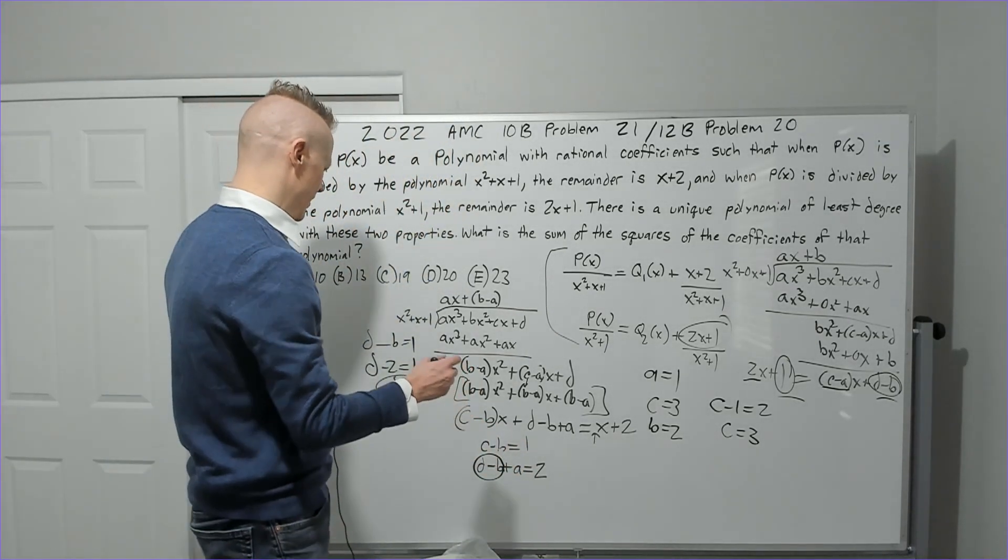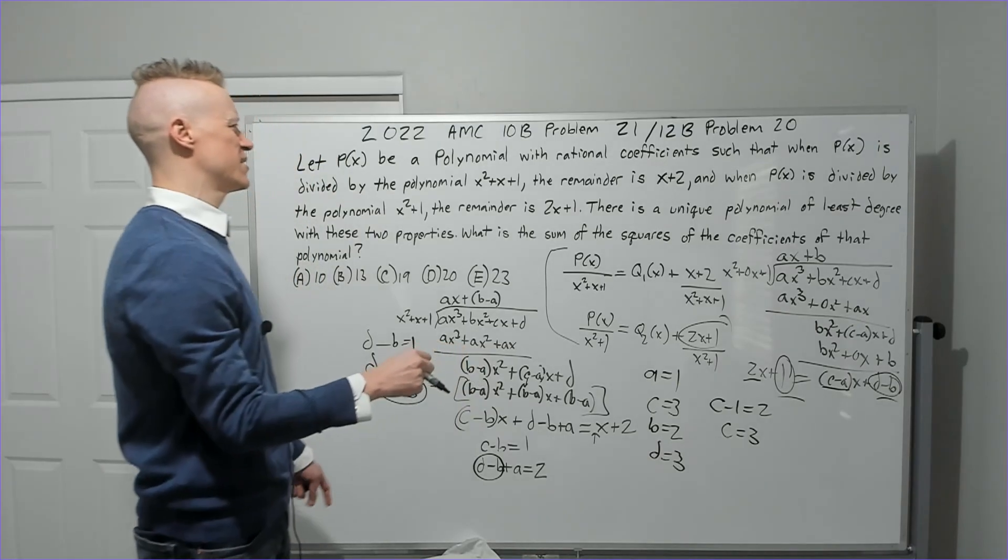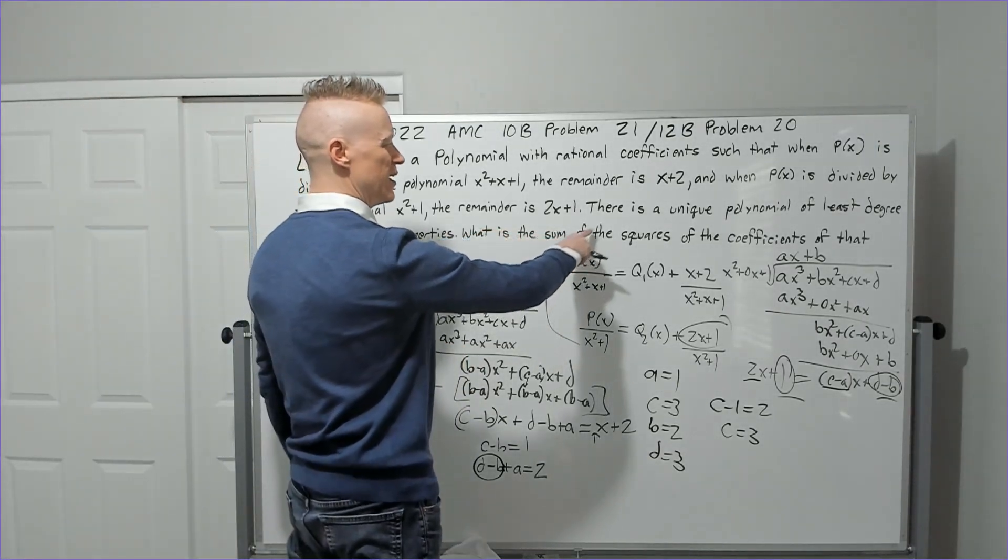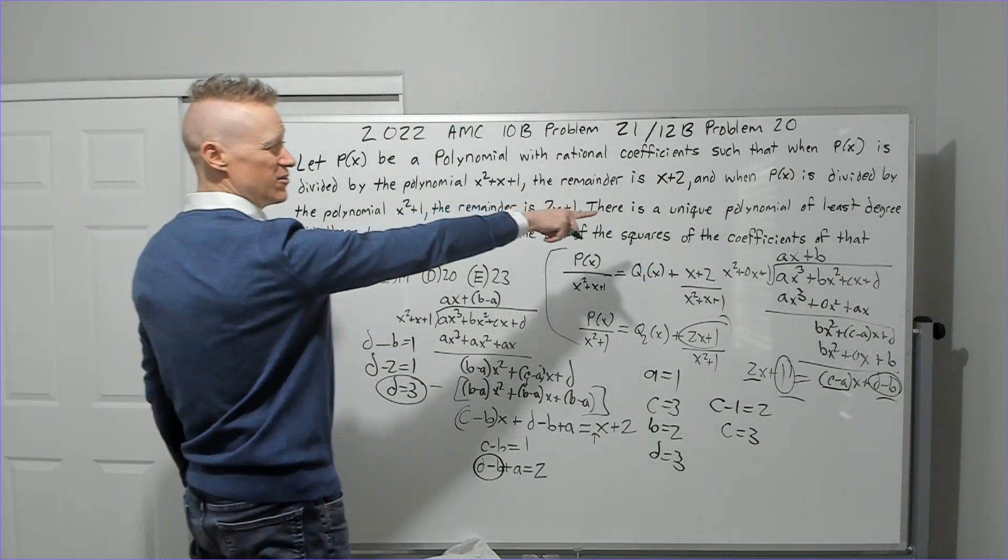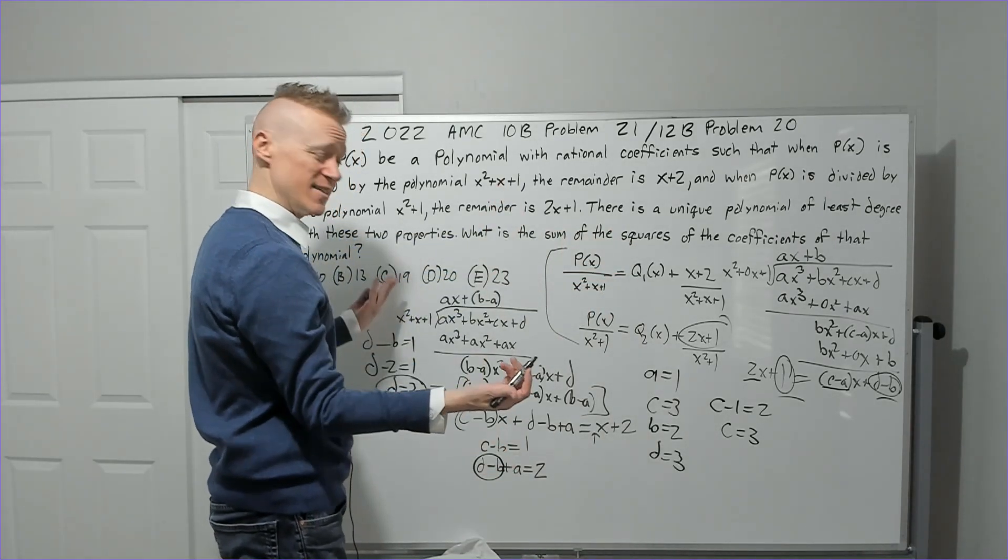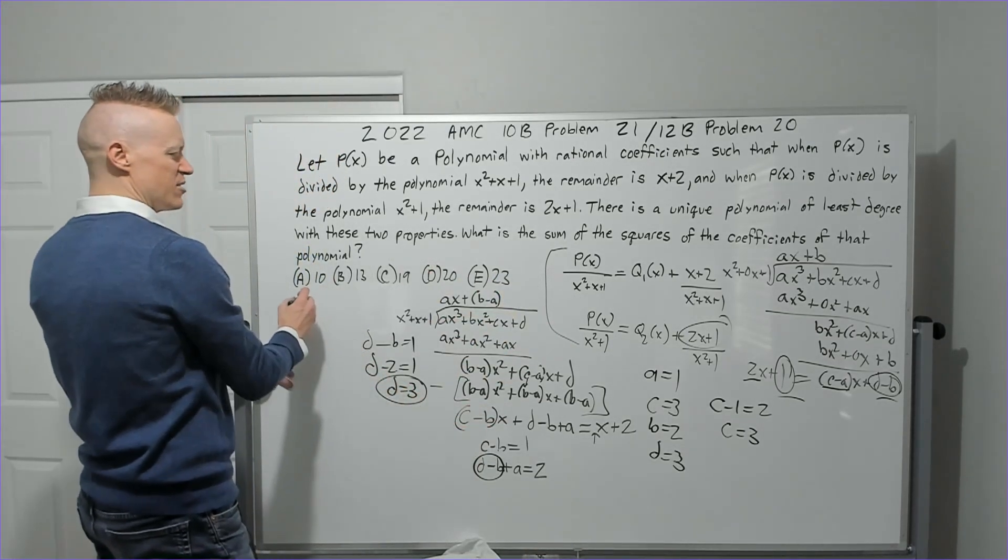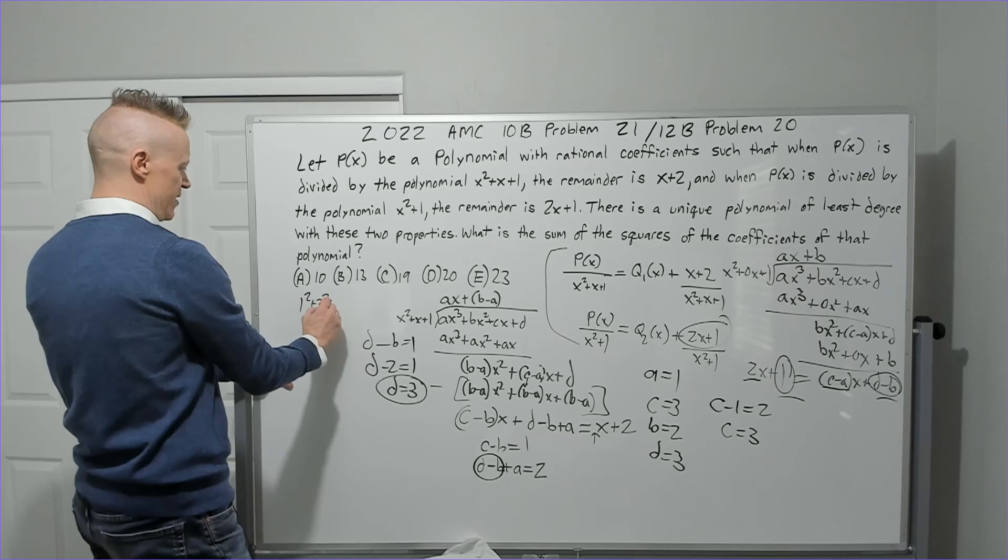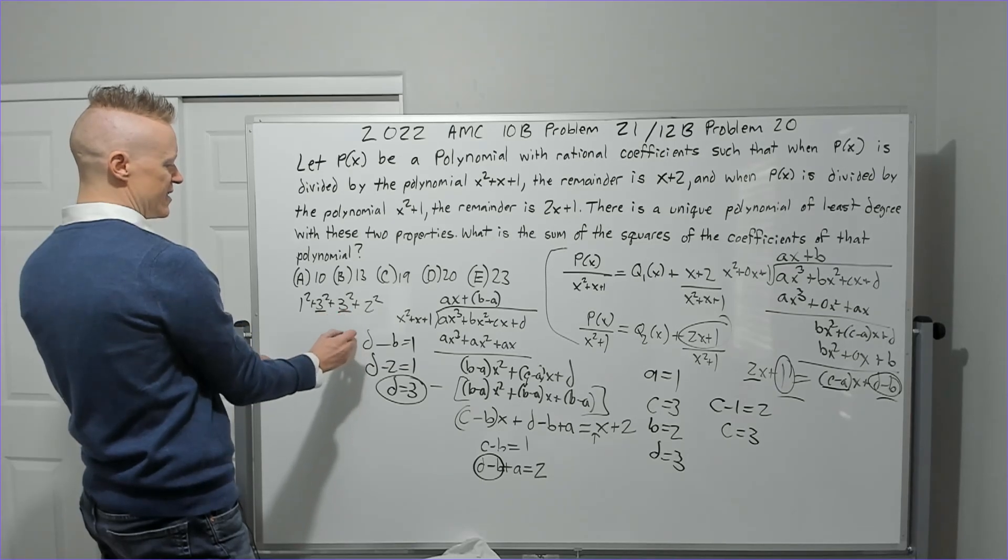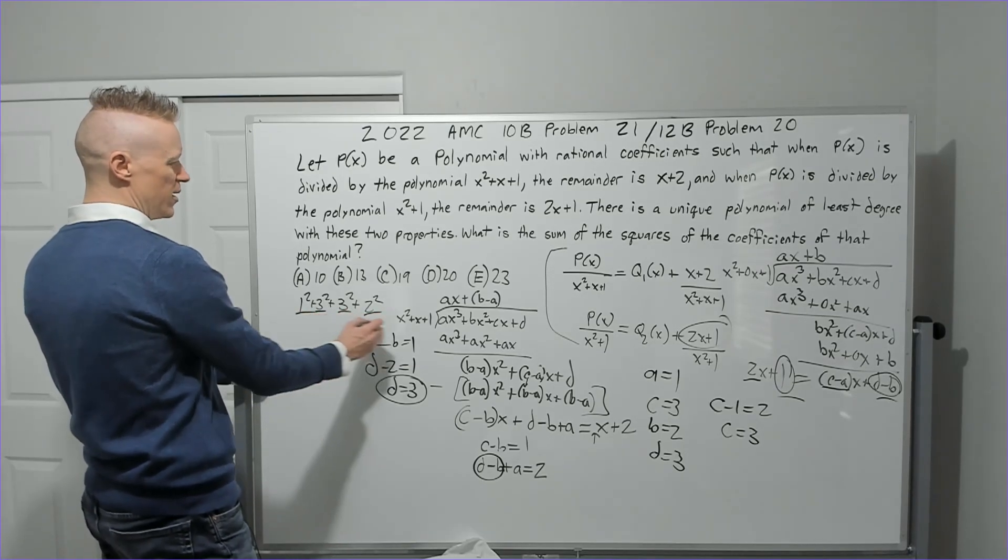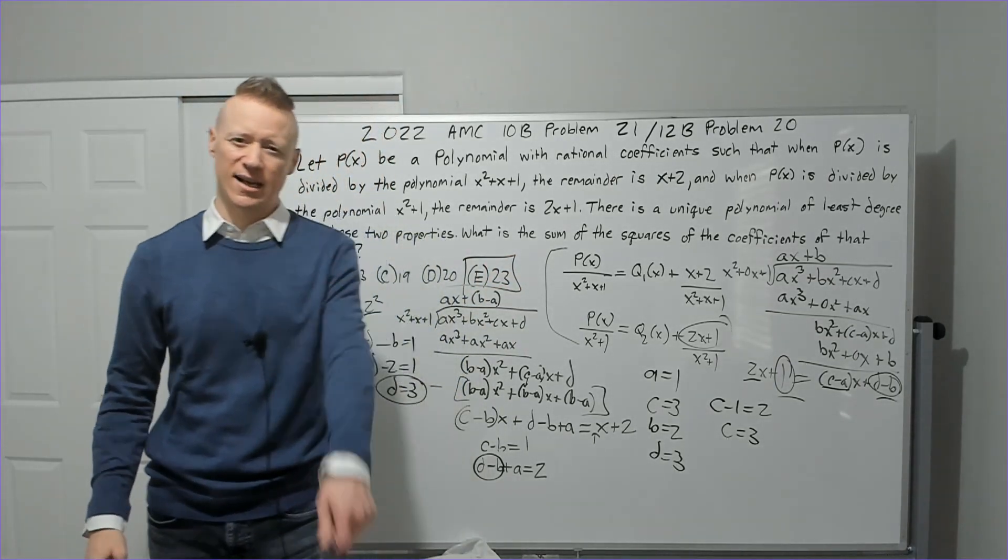So we're going to take our coefficients now, which are 1, 2, 3, and 3. And what does it want us to do? It says, what is the sum of the squares of the coefficients of that polynomial? We do know it's of least degree because we tried quadratic and it didn't work. So now we know that this is the least one because it's the next size up. So you're going to get 1 squared plus 2 squared plus 3 squared plus 3 squared. That's 9. And 9 is 18. And 4 is 22. And one more, answer choice E. Hope you enjoyed the solution. See you guys in the next one.